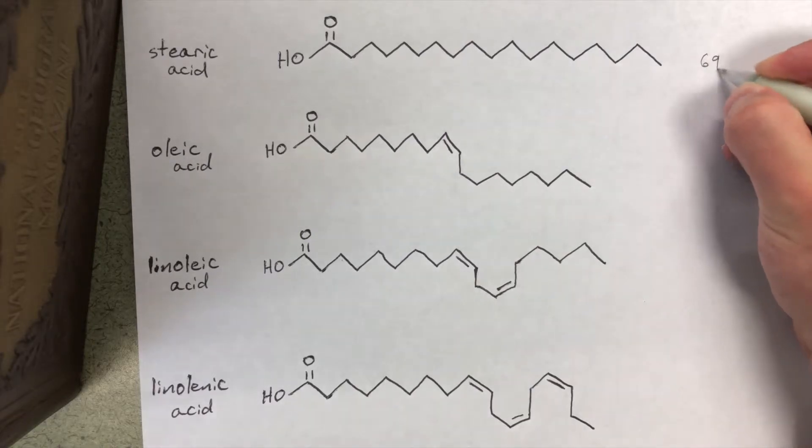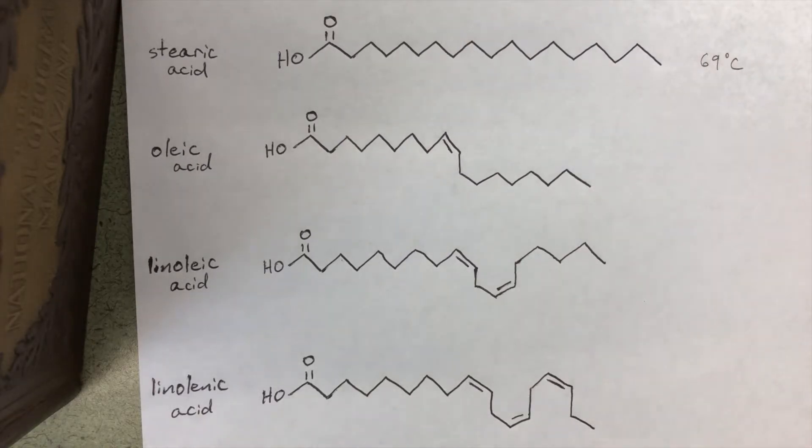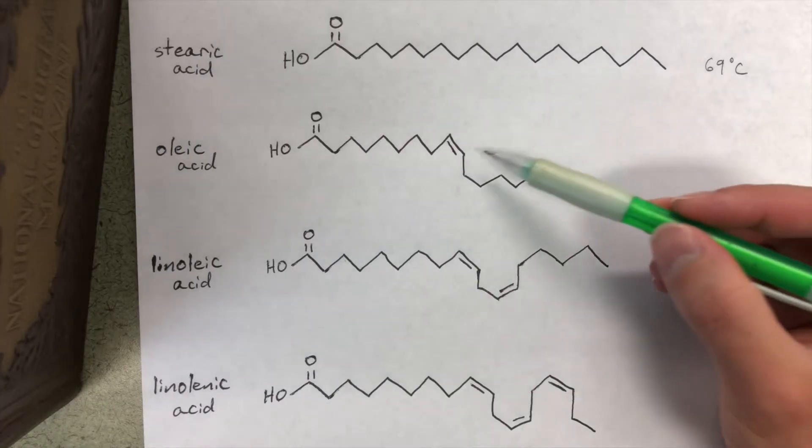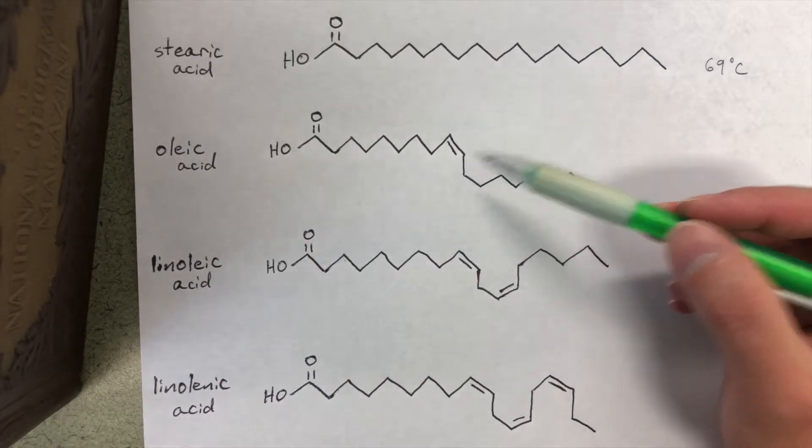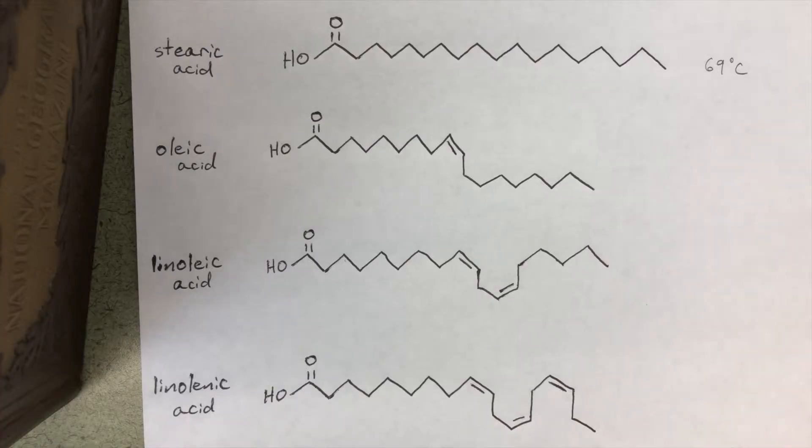If we go below we have oleic acid and here we have one degree of saturation introduced and so we would count this as an unsaturated fat and its melting point is 4 degrees Celsius, so it's a lot lower.